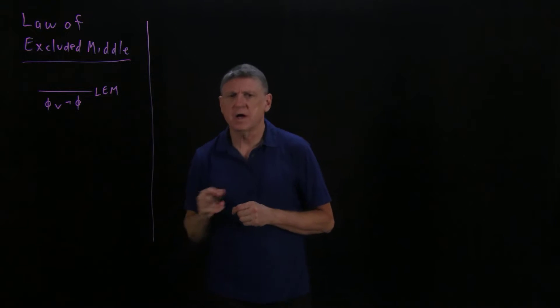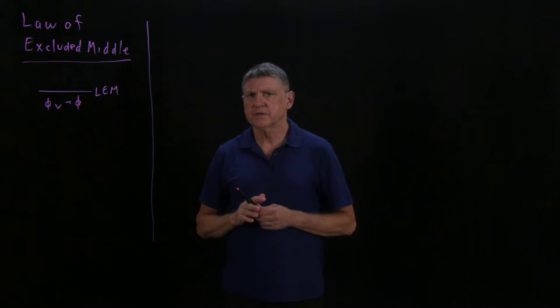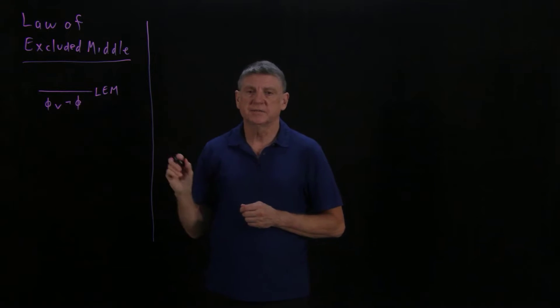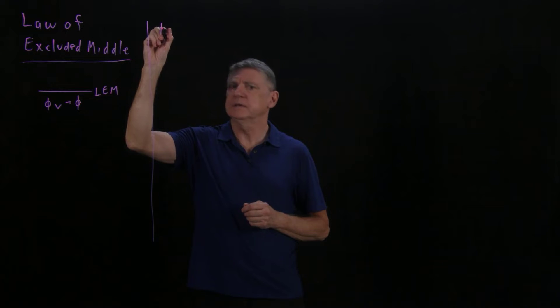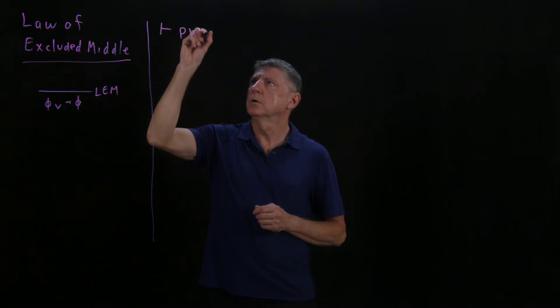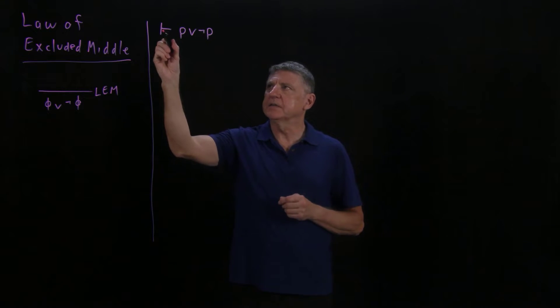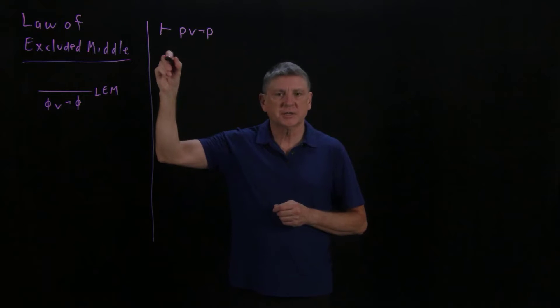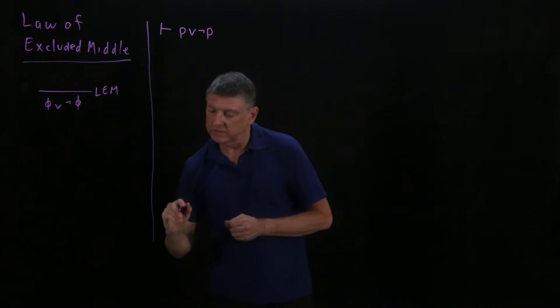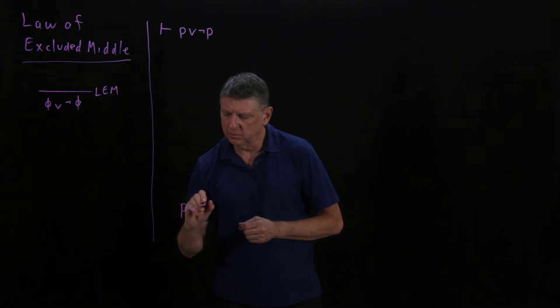Let's try using disjunction introduction and proofs using contradiction. Let's try to prove a theorem that is one instance of this. Suppose that our theorem is that either p is true or p is false. And because there are no premises, we can't actually begin our proof with any number. So what we'll do is, the only thing we can do is we can write our conclusion, which is p or not p.